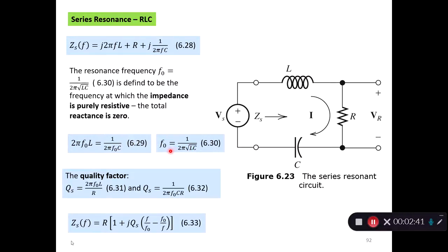From the resonance frequency equation, we also have an expression called the quality factor. That's the relationship between the impedance of the inductor compared to the resistor. That's the quality factor Qs for a series resonance circuit. We can also express the quality factor based on the impedance of the capacitor and the resistor — then it's 1 over 2π times the resonance frequency, C, and R.